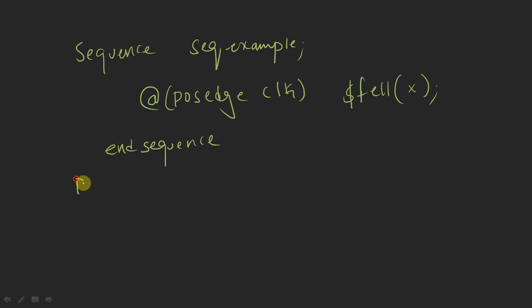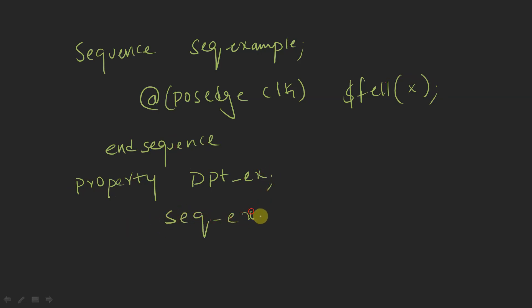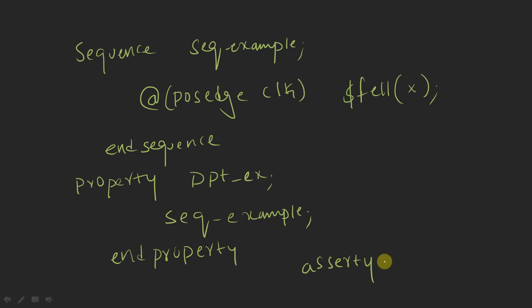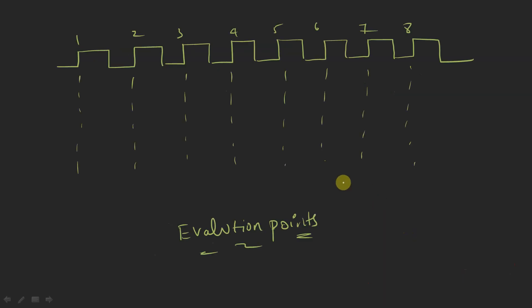Now I am going to declare a property `ppt_example`, and this property will consist of `sq_example`. I am going to end this property and then assert it: `assert property (ppt_example)`. Now I am going to check whether this particular assertion is passing or failing.